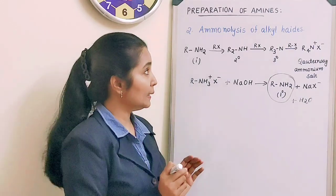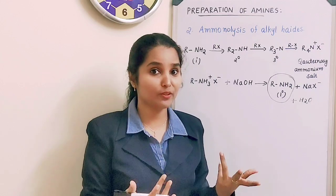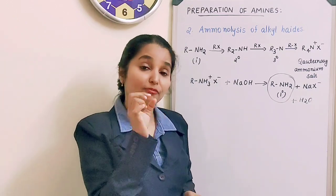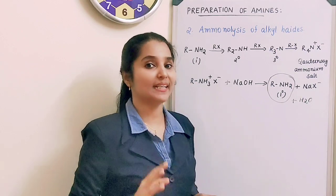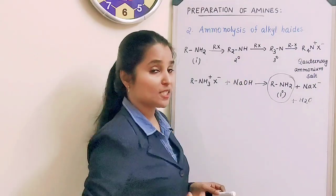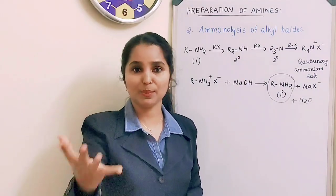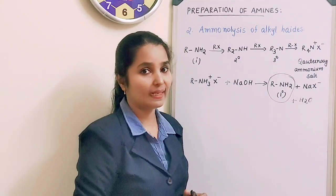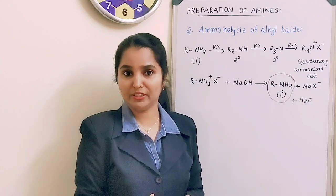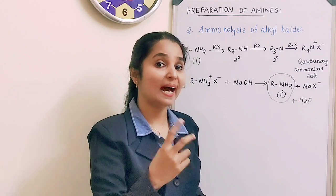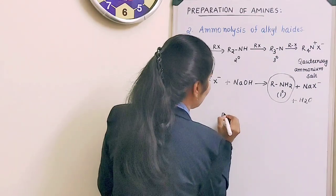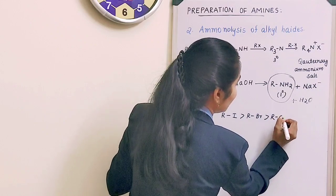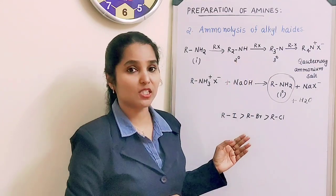This method can preferably be used for the preparation of primary amines by taking an excess amount of ammonia. With excess ammonia, you will get the primary amine predominantly. Regarding reactivity of alkyl halides in aminolysis, the order is RI > RBr > RCl, since a bigger halide is a better leaving group.